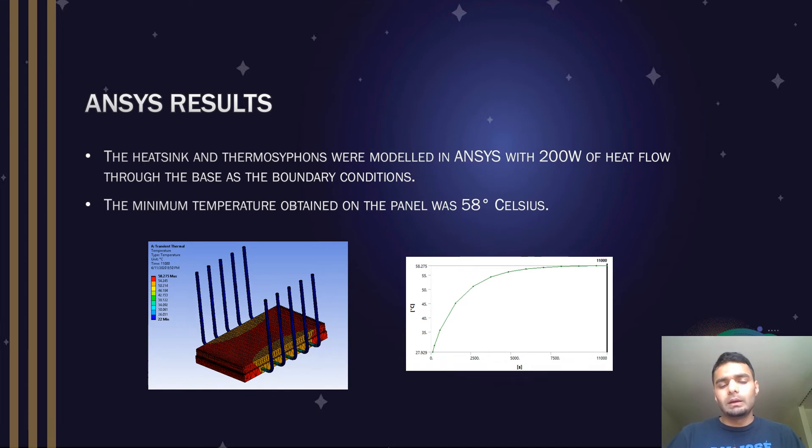We modeled a heat sink with thermosiphons in ANSYS, and it was a crude model because we couldn't incorporate dual-phase change of liquid turning into vapor and back into liquid. So we adjusted the heat transfer coefficient for the material itself to get the results we wanted.